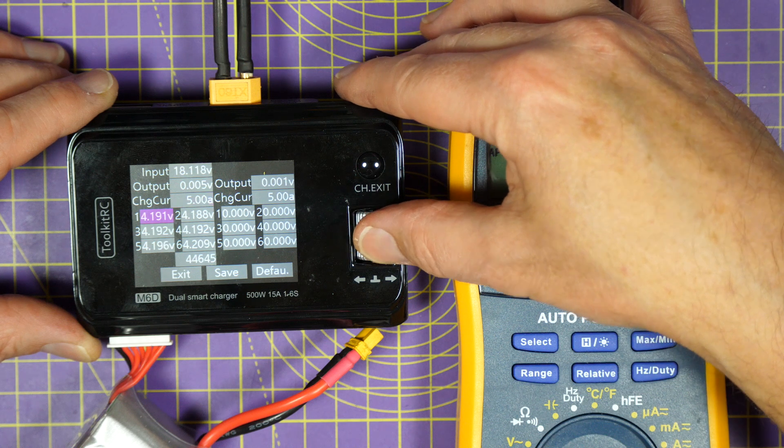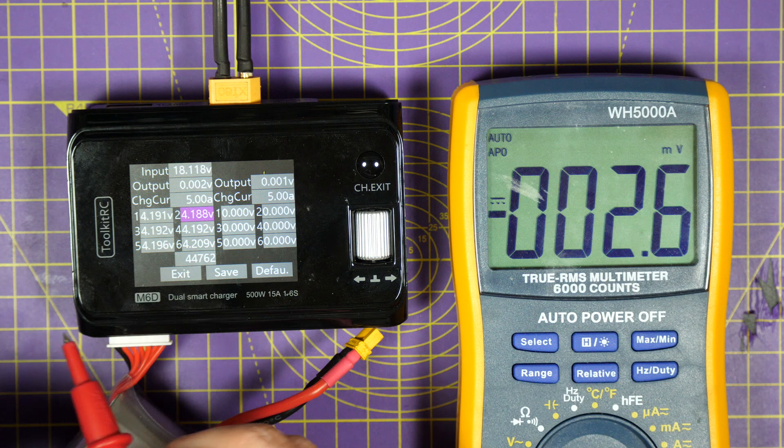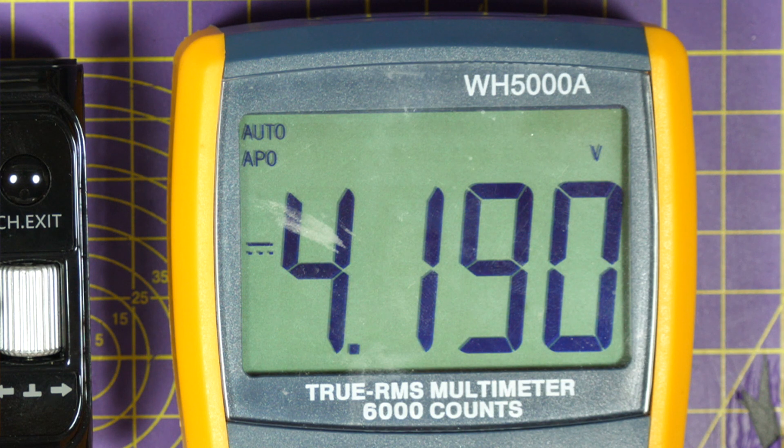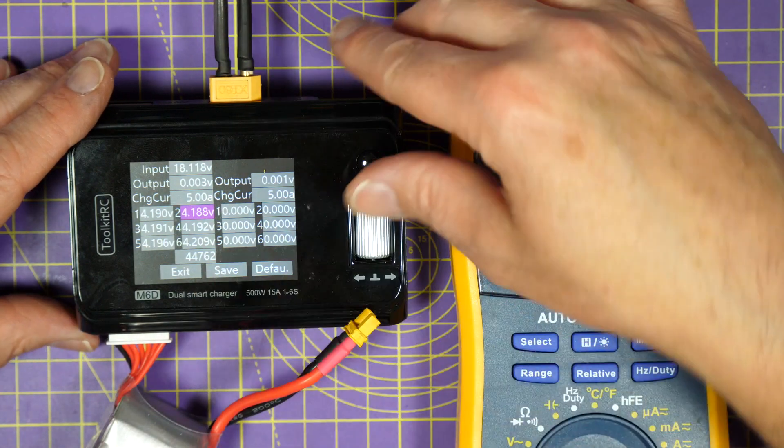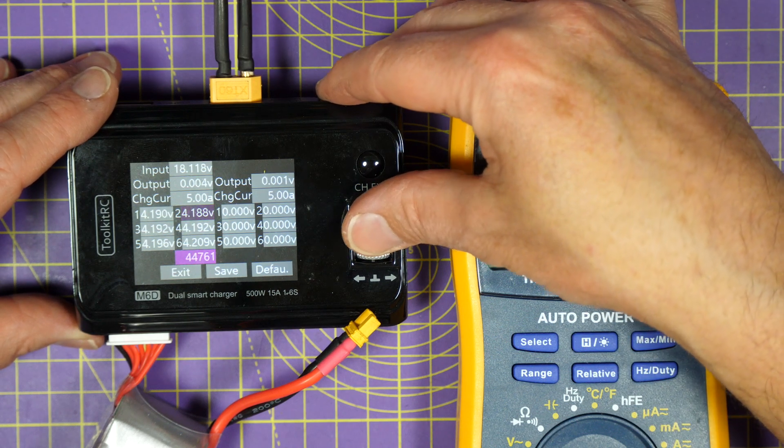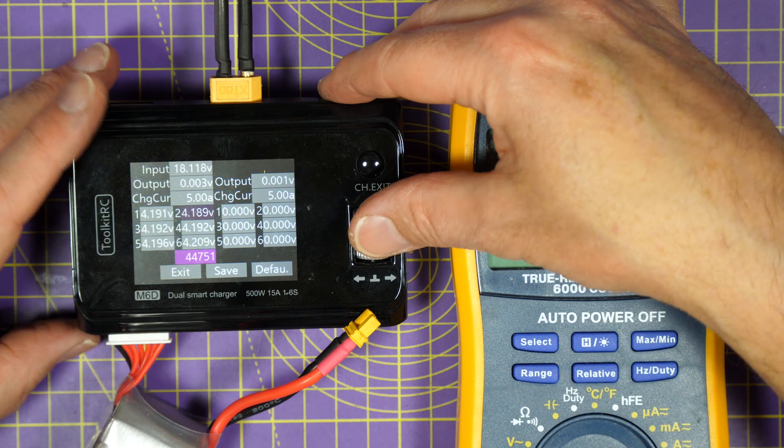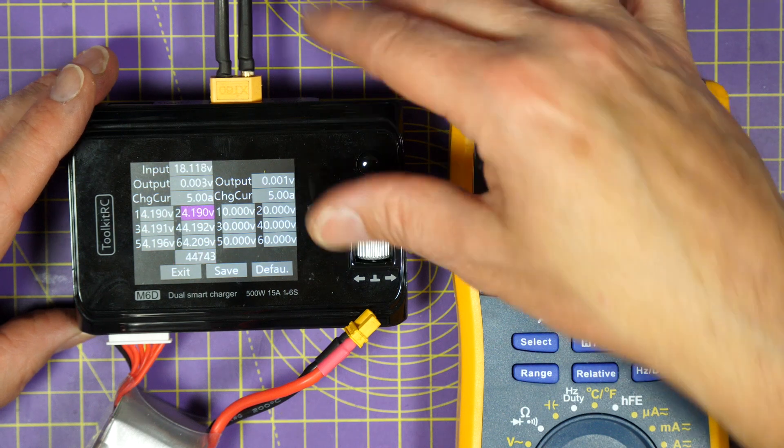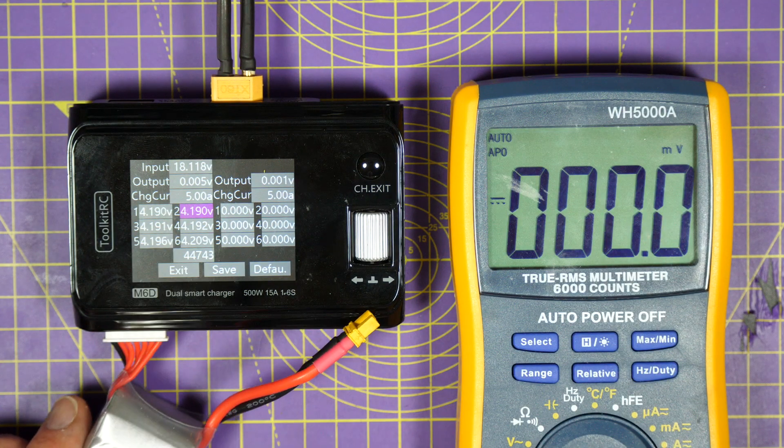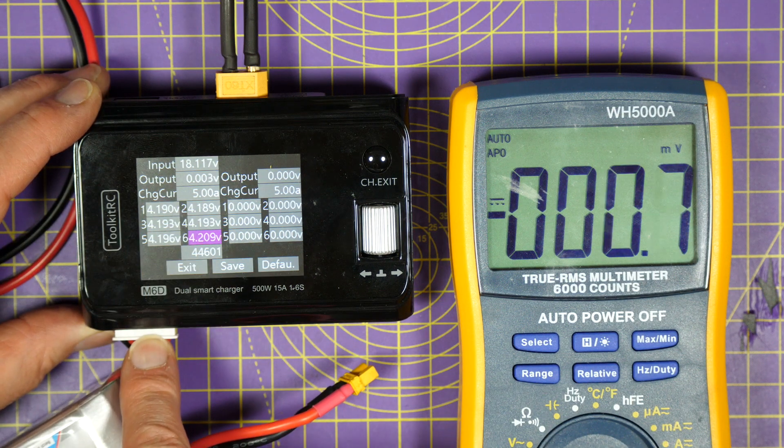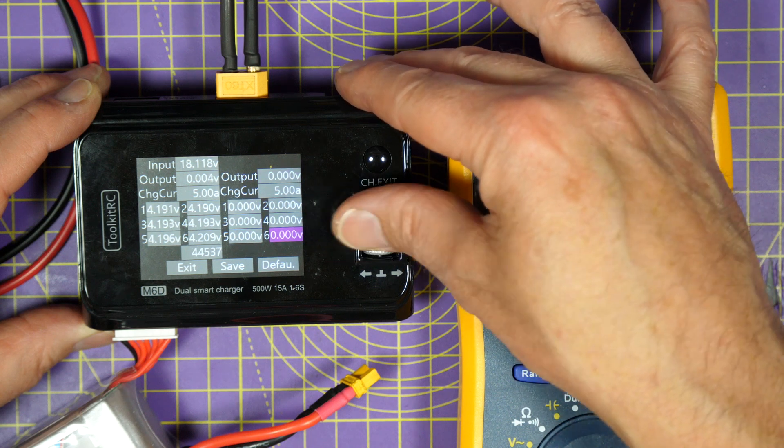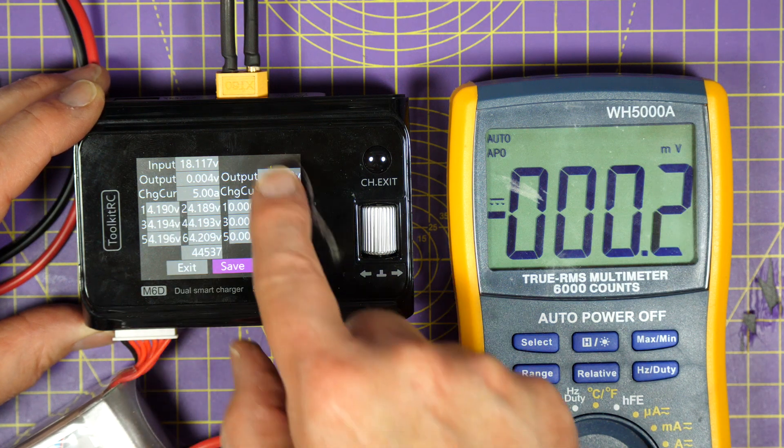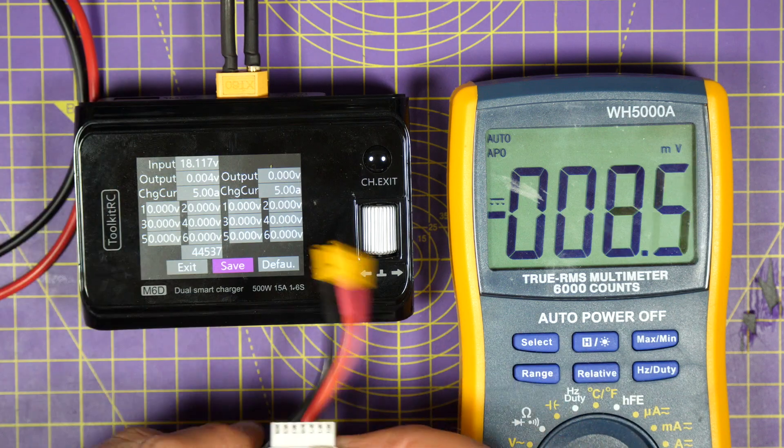Move on to cell number two and again you measure this, but be very careful not to short out the cells. That one is 4.191, okay, so we need to press the scroll button and wind this around to 4.191. There we go, and press return. And you just keep doing that for all of the cells on here. And when you've finished all the cells on the first bank, you can scroll down to save here, and there we are, that side's done.